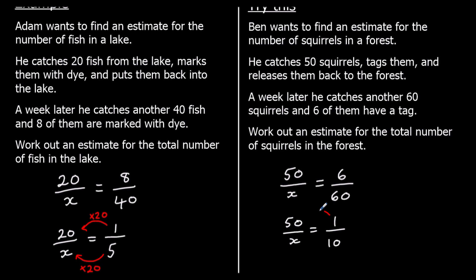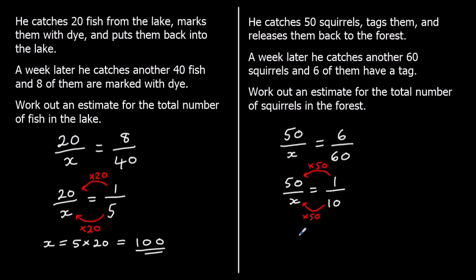So divide top and bottom by 6 and we get 1 tenth. So to get from 1 to 50, we're going to multiply by 50. And to get from 10 to x, we're also going to multiply by 50. Whatever we multiply the top by, we multiply the bottom by the same thing for fractions to stay equivalent. So the total number of squirrels is 10 times 50 and that is 500.